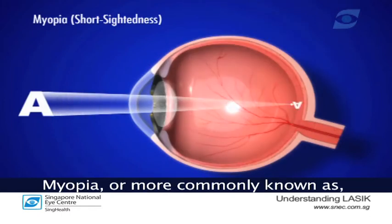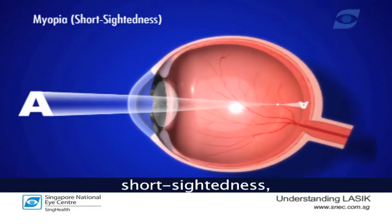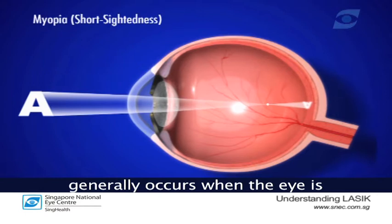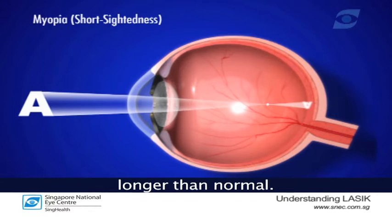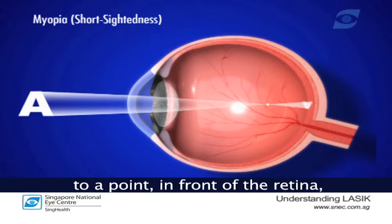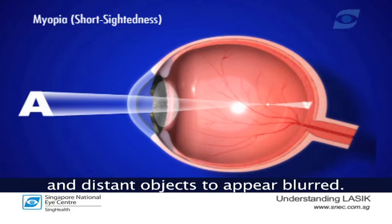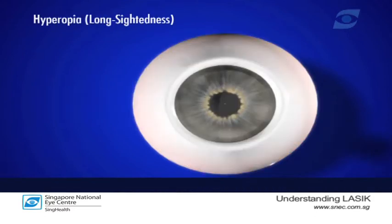Myopia, more commonly known as short-sightedness, generally occurs when the eye is longer than normal, so that distant light rays are focused to a point in front of the retina, causing close objects to be seen clearly and distant objects to appear blurred.